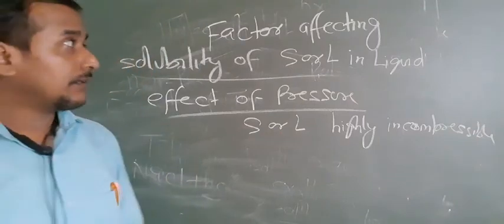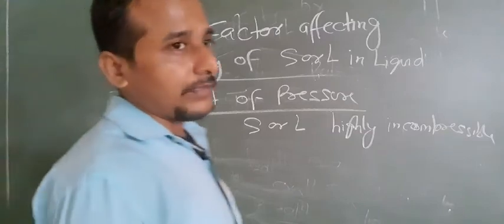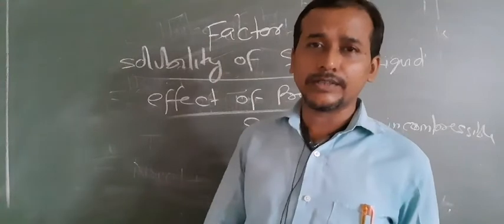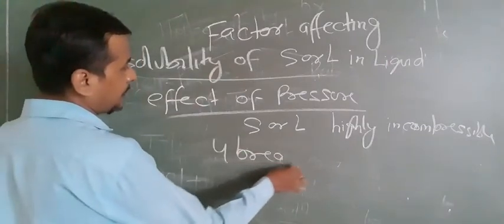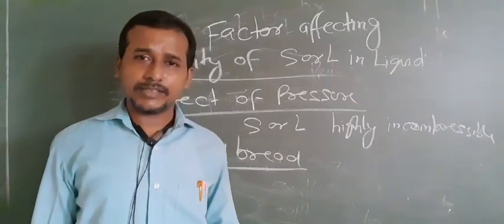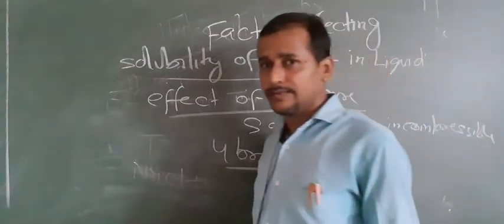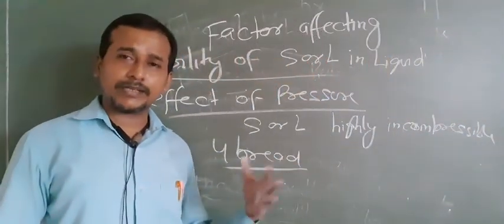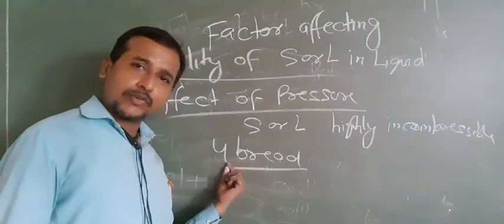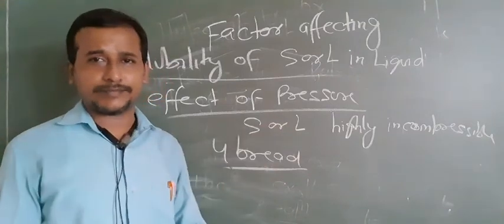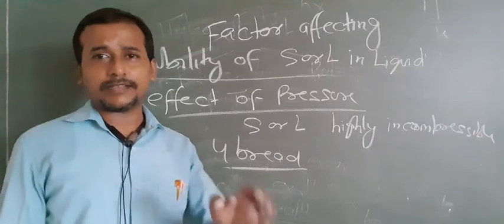Some more points to know: saturated solution, unsaturated solution, and supersaturated solution. If a given amount of solvent dissolves less amount of solute than it can, they are unsaturated. If the solvent dissolves exactly the required amount of solute, it is saturated. If extra amount of solute — more than required — is added to the solvent, that condition is known as supersaturated, and this is basically an unstable system.